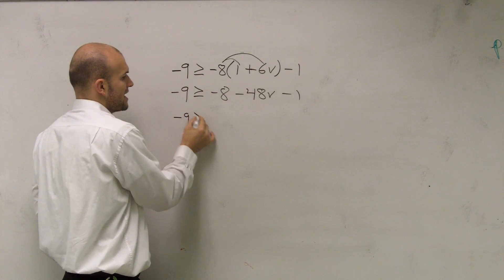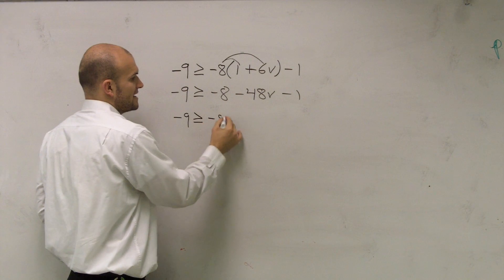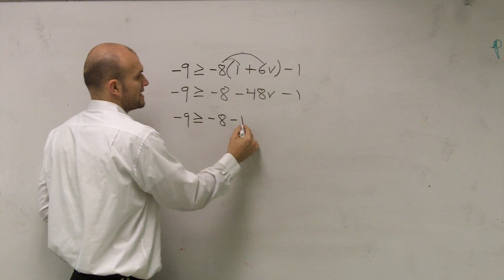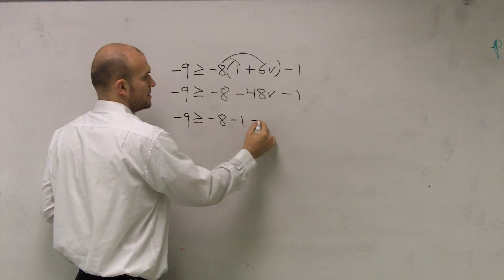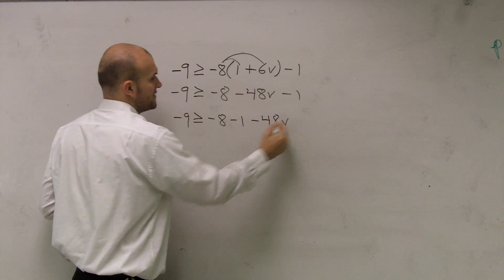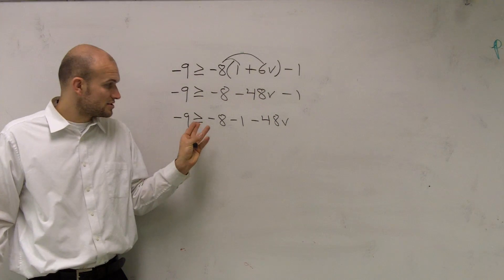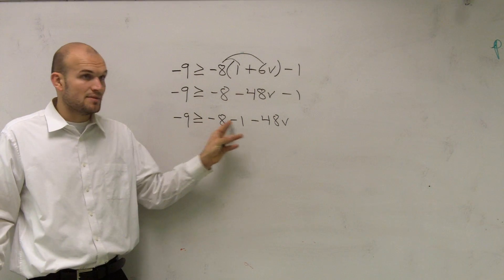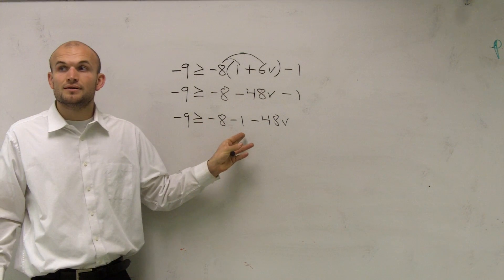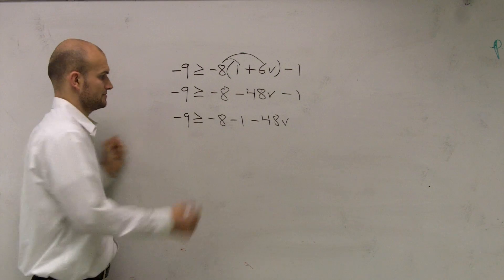So negative 9 is greater than or equal to negative 8 minus 1 minus 48b. Now you can see this is pretty easy to solve — negative 8 minus 1 is going to be negative 9.